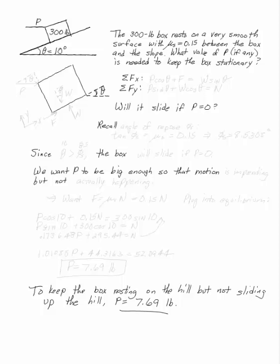The 300-pound box rests on a very smooth surface with mu s equals 0.15 between that box and that slope. I want to know what's going to happen. What value of P do I need to keep that box on that hill?